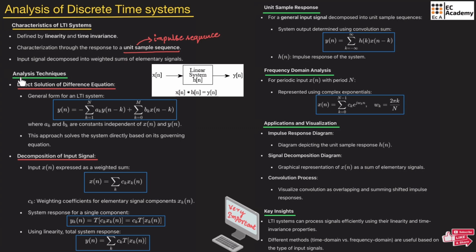There are two techniques to analyze the LTI system. The first is direct solution of the difference equation, where the output of the LTI system is represented as: Y(N) = minus summation of K from 1 to N of A_K · Y(N-K), plus summation of K from 0 to M of B_K · X(N-K). The index variable K ranges between two values — from 1 to N for the first summation, and from 0 to M for the second.